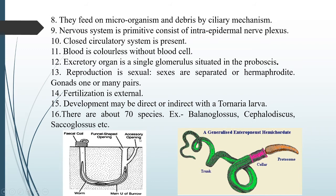The circulatory system in Hemichordata is a closed type — an advanced type of circulatory system, not open type. The blood is colorless and without any blood cells; blood cells are absent.